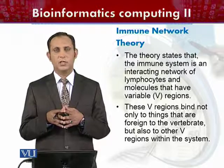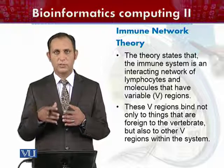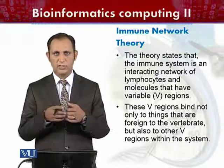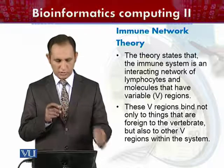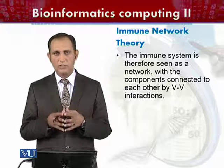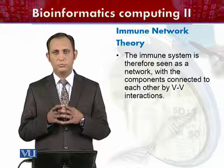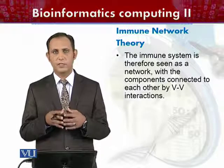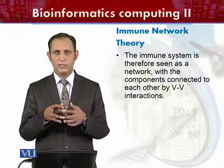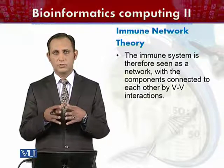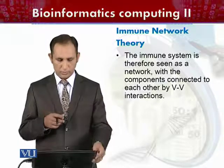These V regions have the ability to bind to foreign intruders — the pathogens coming from outside the body causing diseases. They also have the ability to interact with molecules within the body that have these V regions. So molecules having V regions can interact with each other as well as with foreign intruders. This network can be seen as components connected through V-V interactions, because variable regions bind to foreign intruders and also interact among themselves.